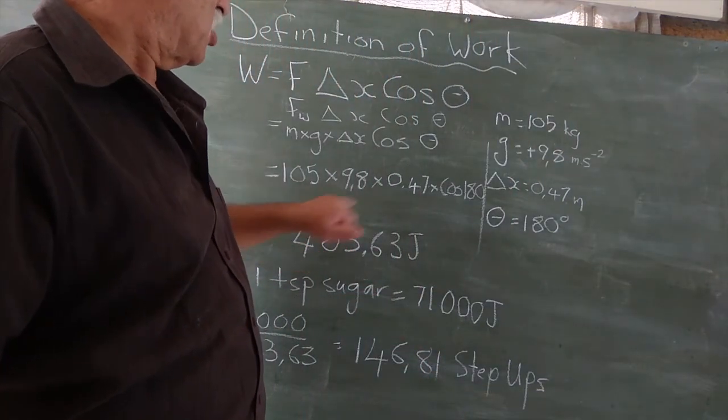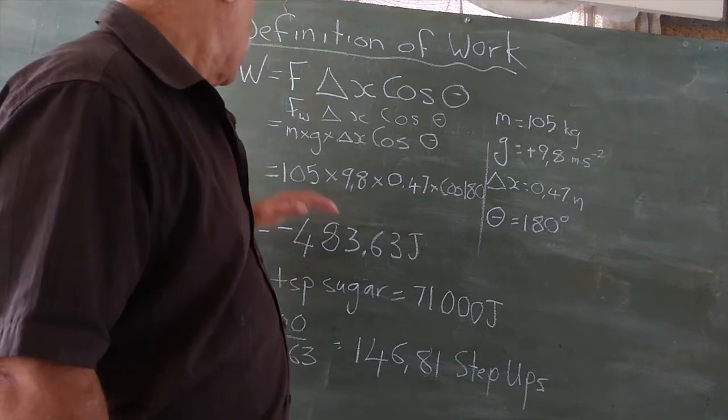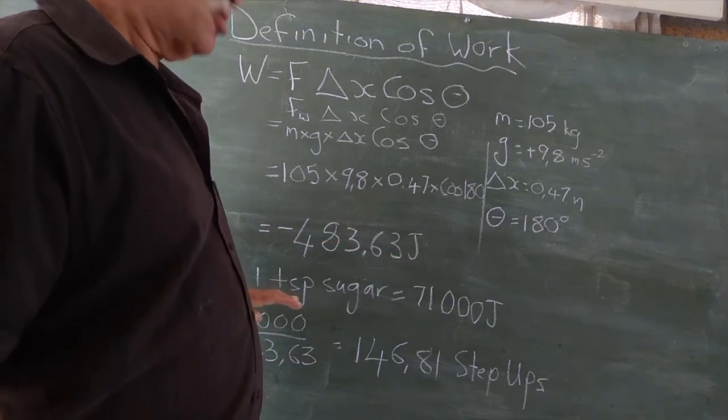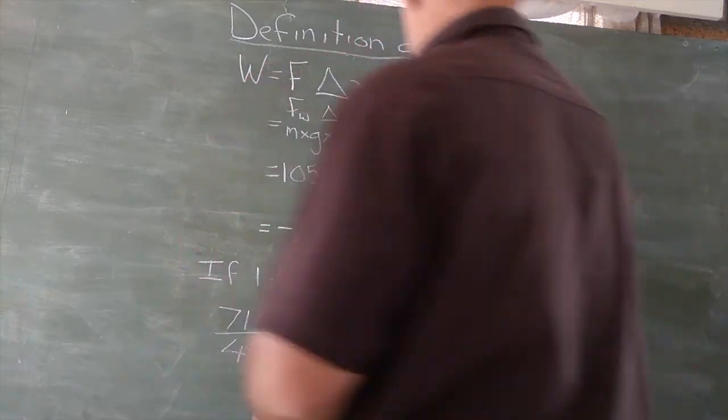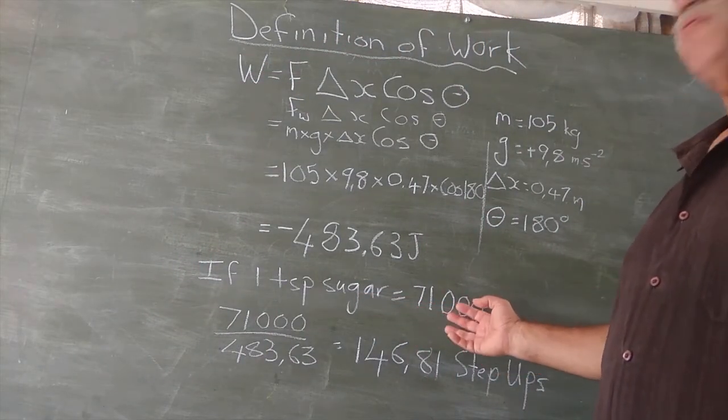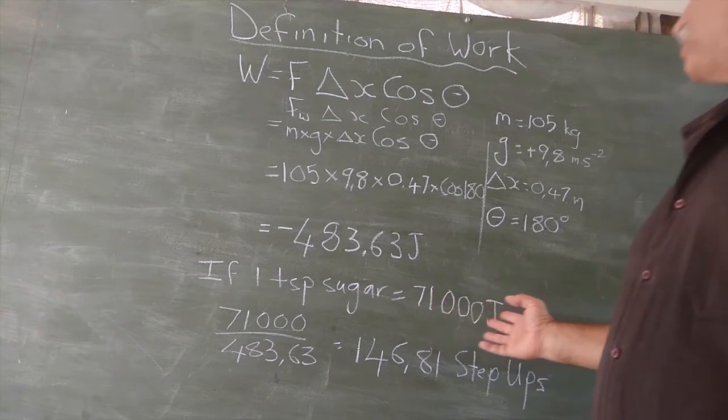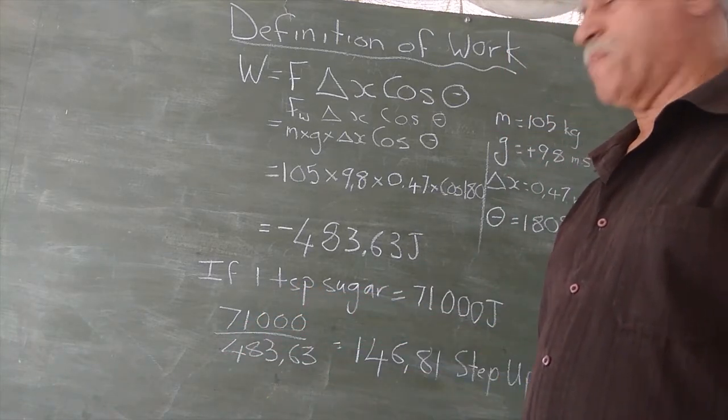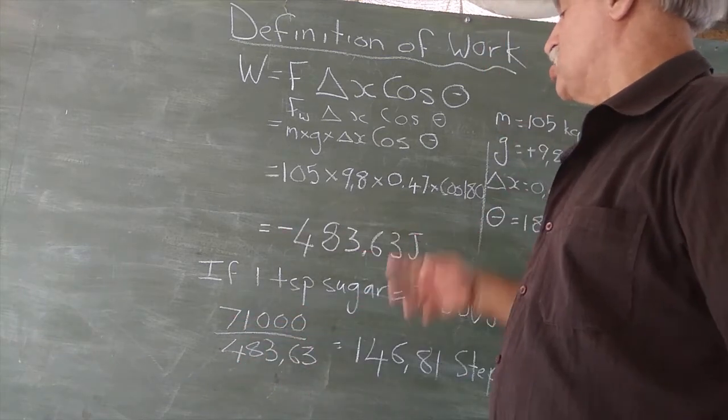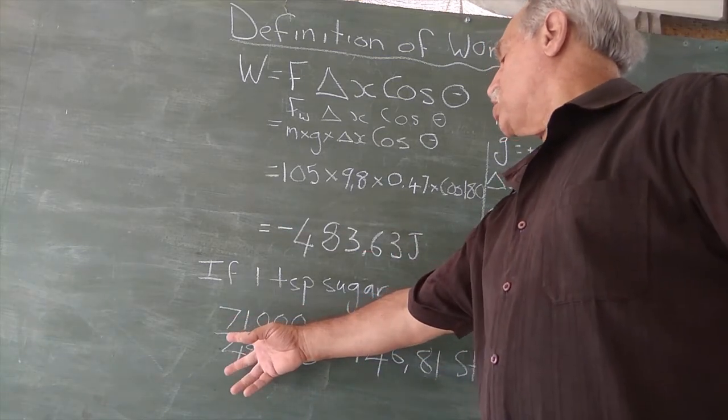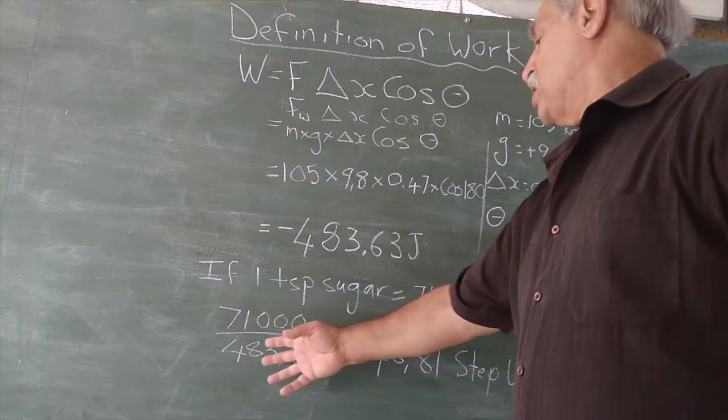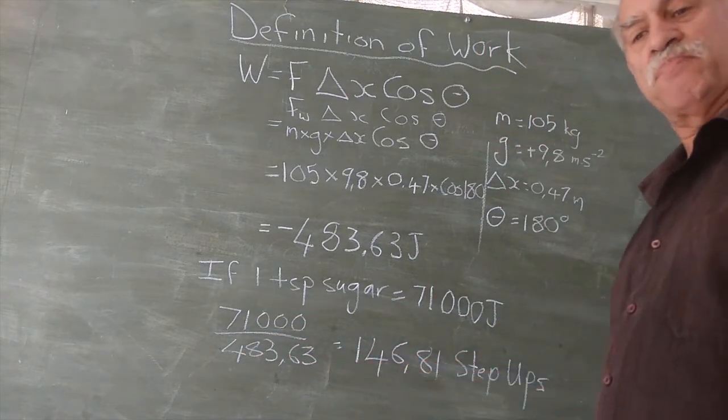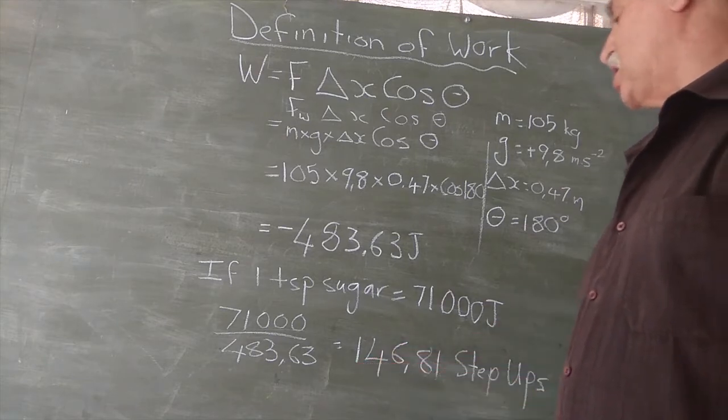And when we do the maths, we get a negative answer because cos 180 is minus 1. So, in doing one step-up, it takes 483 joules. Now, I looked it up. A teaspoon of sugar is 71,000 joules. So, if we want to find out how many step-ups we've got to do, we divide this amount of energy by one amount of energy lost in a step-up. It's lost to the system, meaning it's negative. So, here we divide 71,000 by 483 and we find it comes to 147 step-ups. 146.8 step-ups we have to do.